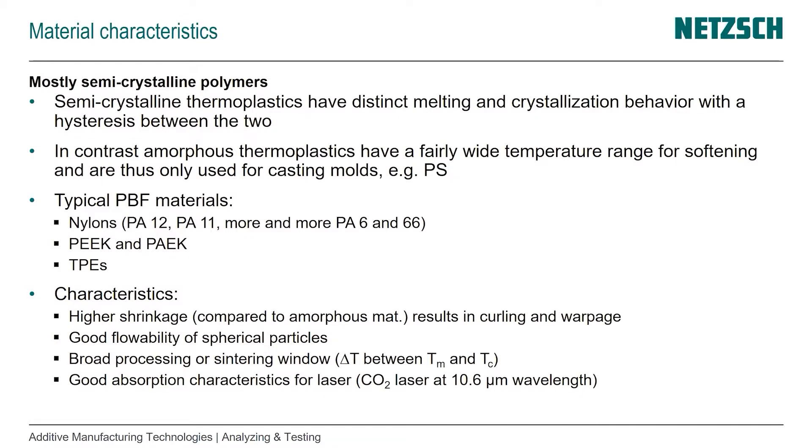In the last video, I already mentioned semi-crystalline polymers and what 100% crystalline structure would mean. Polymers are always semi-crystalline - they have amorphous and crystalline parts, so they're never 100% crystalline. Therefore, they have a distinct melting and crystallization behavior with a hysteresis between the two, and that's important for our process window.